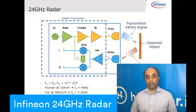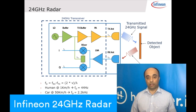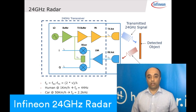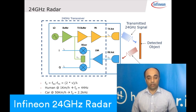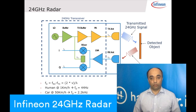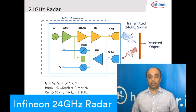Currently, the demo that you saw focuses on CW radar. What you transmit hits the target, comes back, and gives you a Doppler frequency or IF frequency. That frequency is proportional to the velocity of the object. For example, if you have a human walking at one kilometer per hour, you will get a Doppler shift of 44 Hz. If there is a car at 50 km per hour, you will get a Doppler shift of 2.2 kHz.